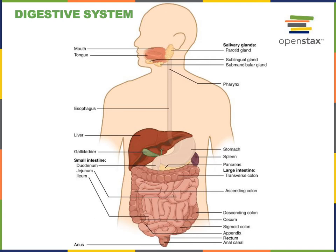Within the stomach, the bolus mixes with gastric juice to form a semi-liquid substance known as chyme. Gastric juice has a very low pH — it's very acidic — and this helps protect against infection through antimicrobial activity, helping to kill bacteria. The acid also helps to denature proteins as well as activate an enzyme known as pepsin. Pepsin is a protease that initiates the chemical digestion of proteins, breaking long polypeptides into shorter polypeptides.